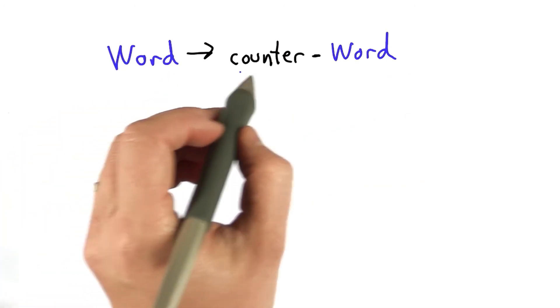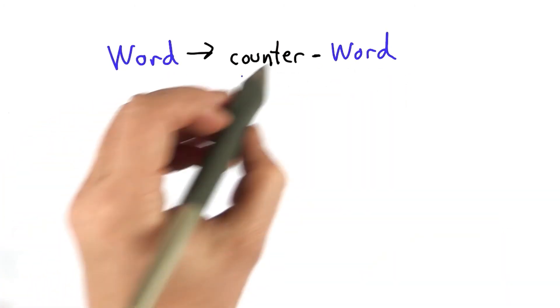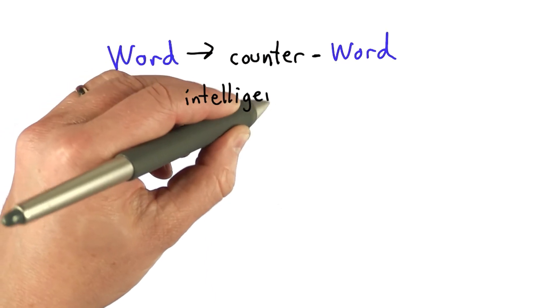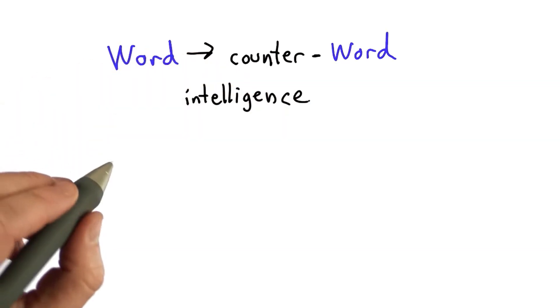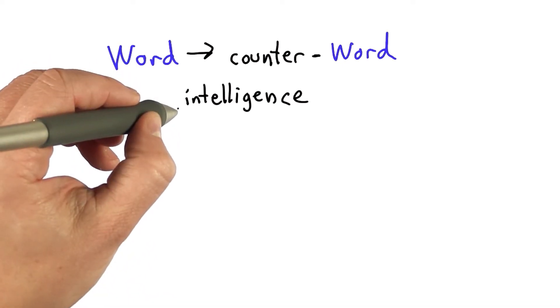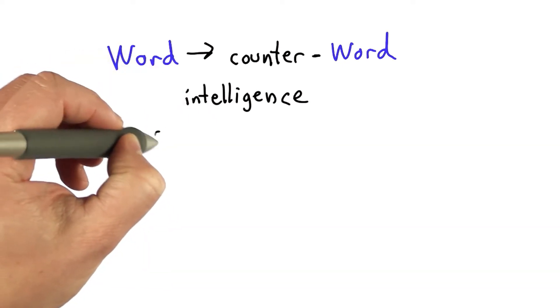But the basic property is that we can replace what's on the left side with what's on the right side. So anytime we have a word, we can replace it with counter word. And the meaning of the new word is something that goes against the original word. So if we started with the word intelligence, and I mean this in the sense of spycraft, not in terms of smarts, well then we can use the rule.